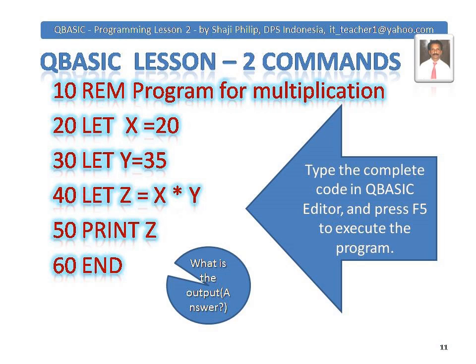Here you have another program — this one is for multiplication. X has a value of 20, Y has a value of 35, and Z is assigned the value X * Y. Then Z is printed. So 35 multiplied by 20 — that value will be calculated and printed on the screen. Type this entire code and press F5 to execute the program.